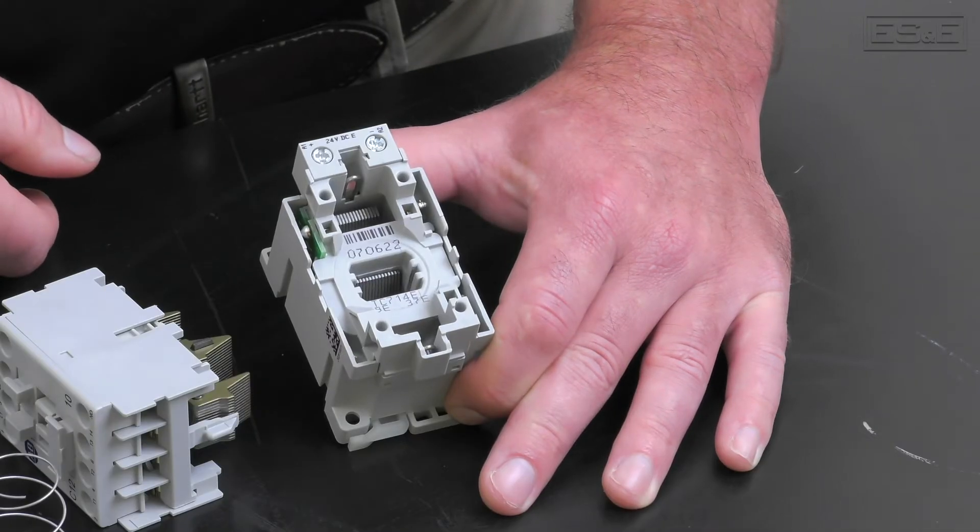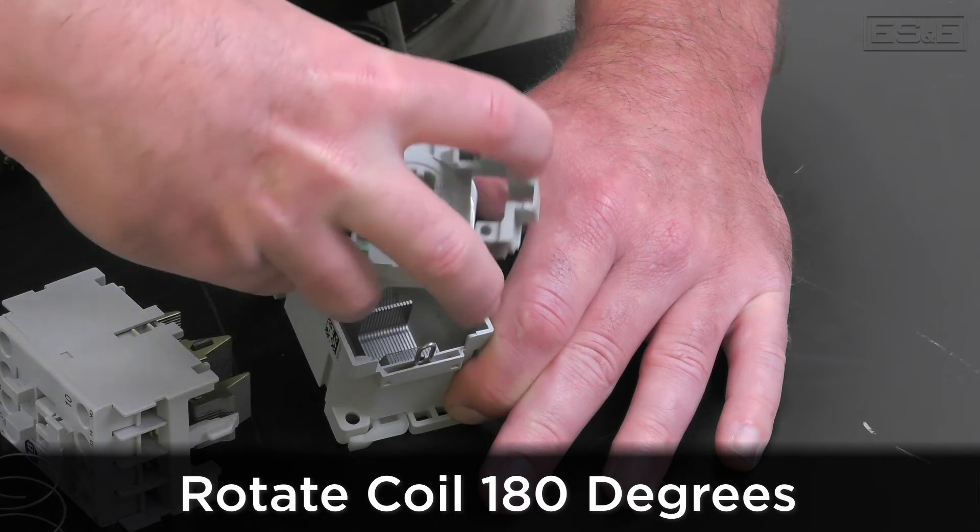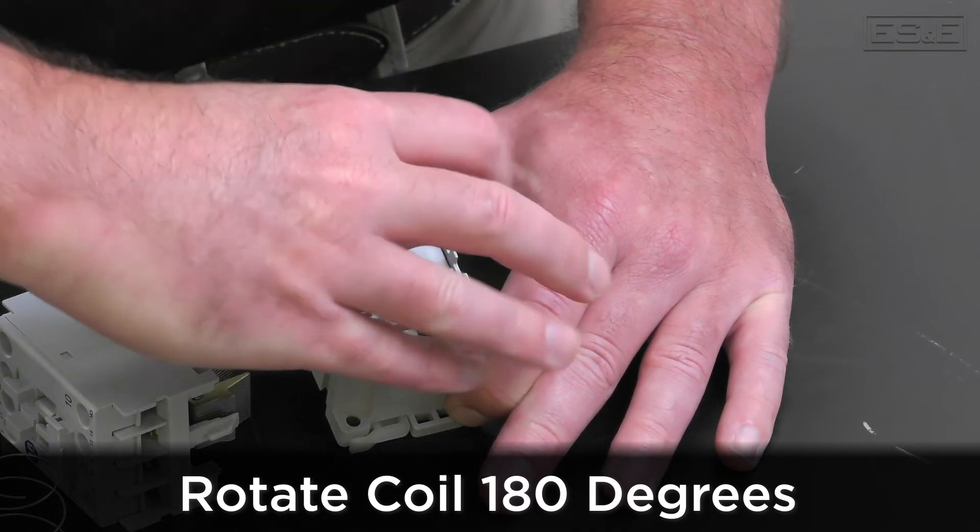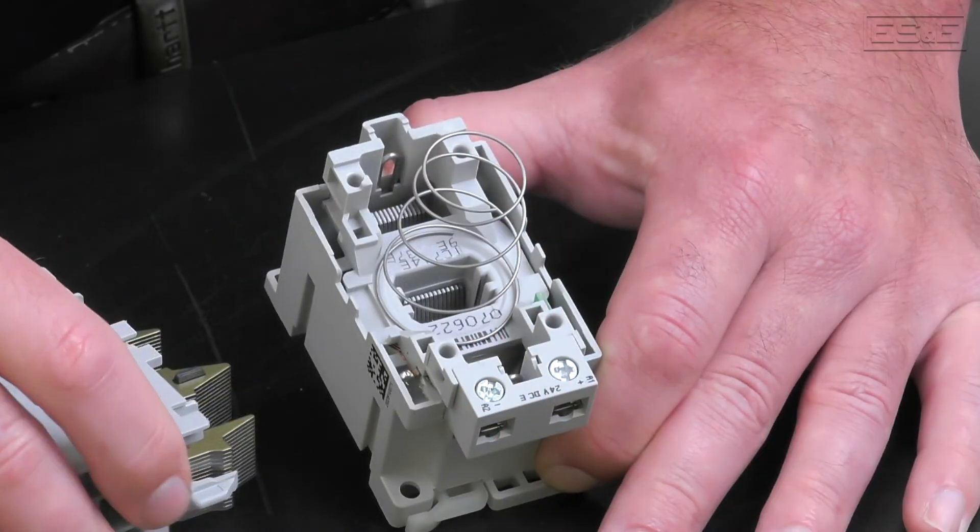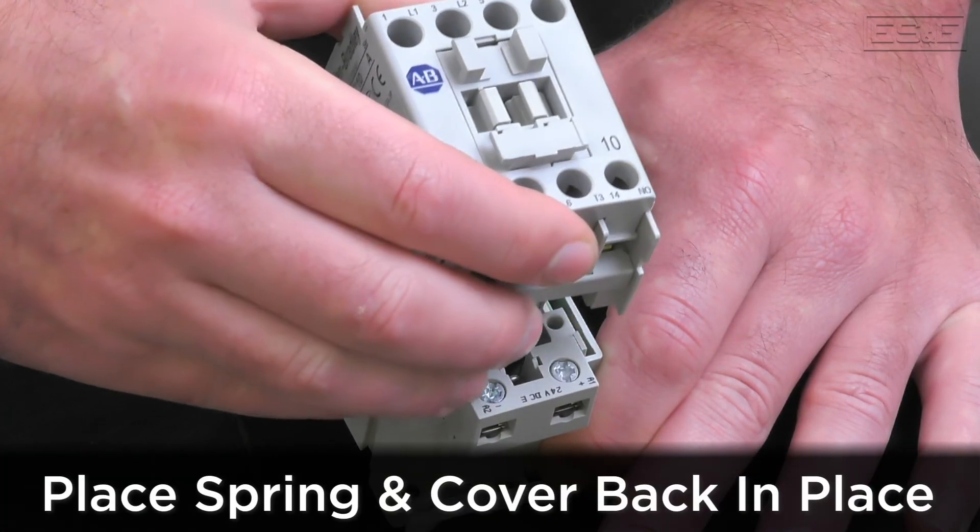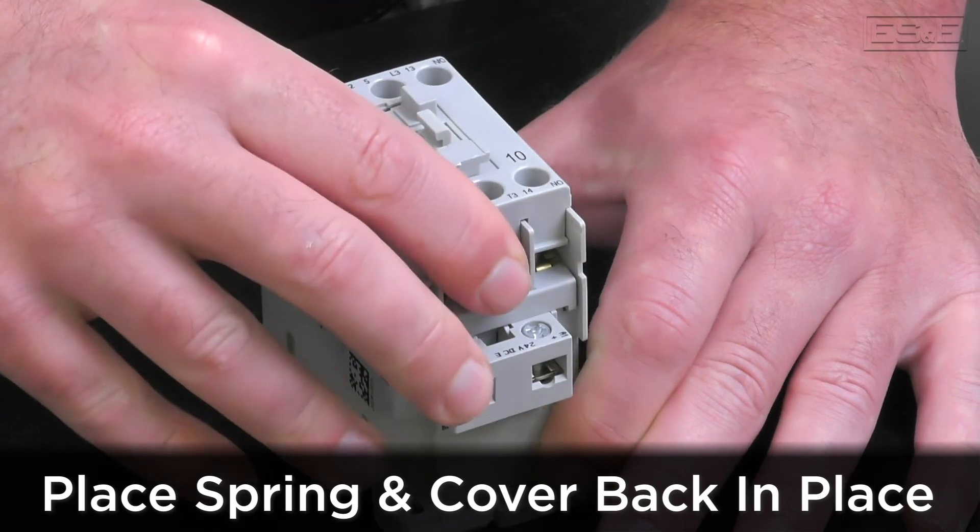If you are rotating the coil, rotate it 180 degrees so that the terminals are facing the opposite side of the contactor. Then place it back down into the contactor base. Once the coil is properly seated, you can place the spring back on top and then replace the cover.